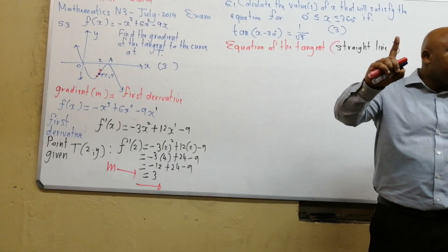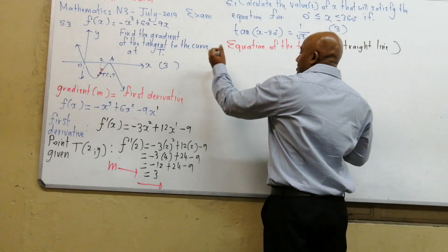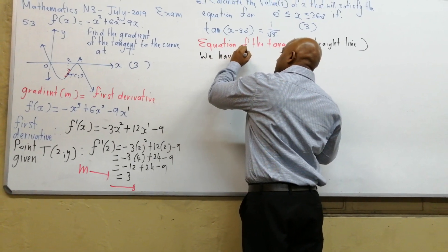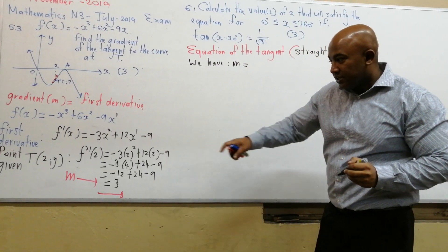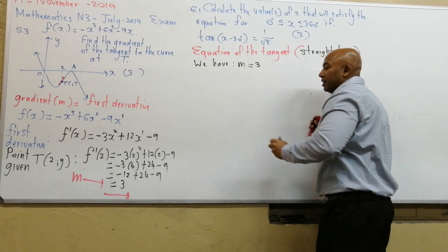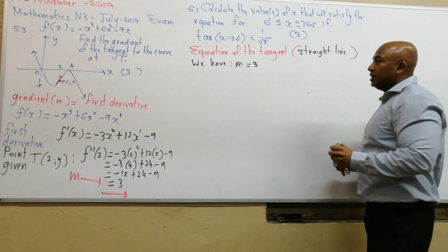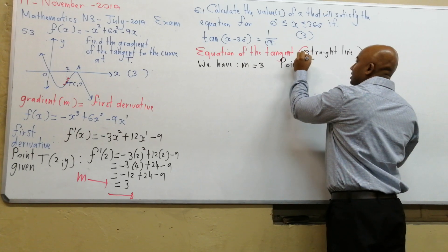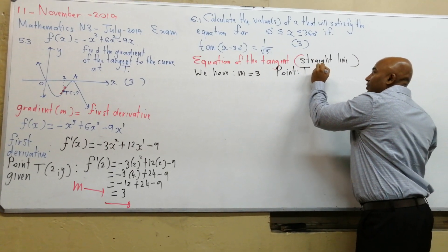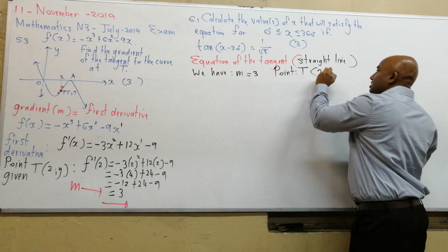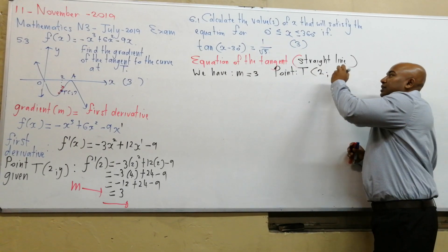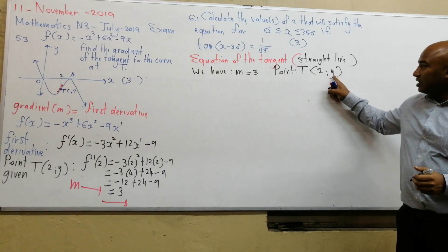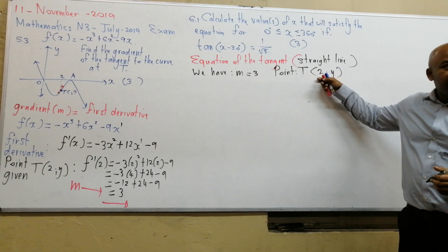To find the equation of a straight line, we need one point and the gradient. We already have the gradient, which is 3. We have point T, and we know the x-value is 2. We still need to know the corresponding y-value.